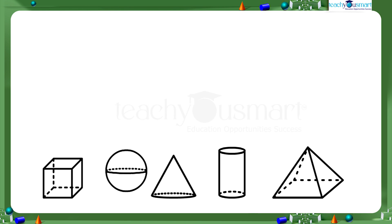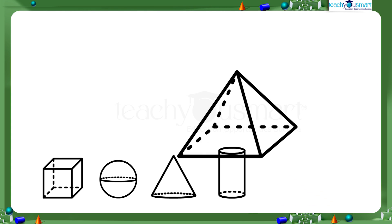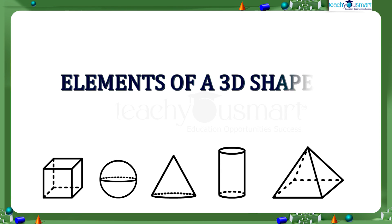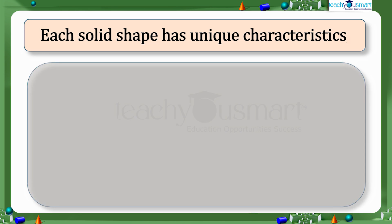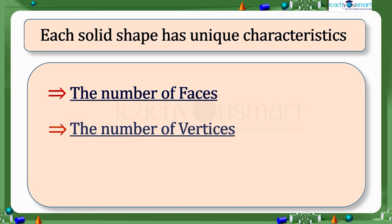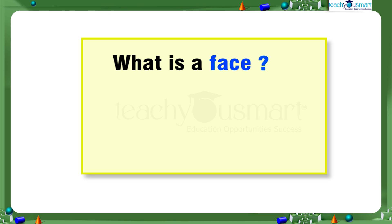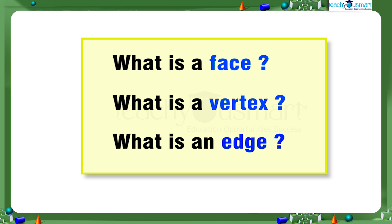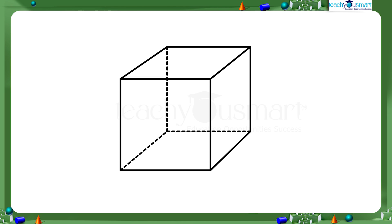Cone, cylinder, and pyramid. Let's see some elements of a 3D shape. Each solid shape has unique characteristics that define it, such as the number of faces, vertices, and edges. We need to understand what is a face, what is a vertex, and what is an edge. We can explain these elements by taking a cube.